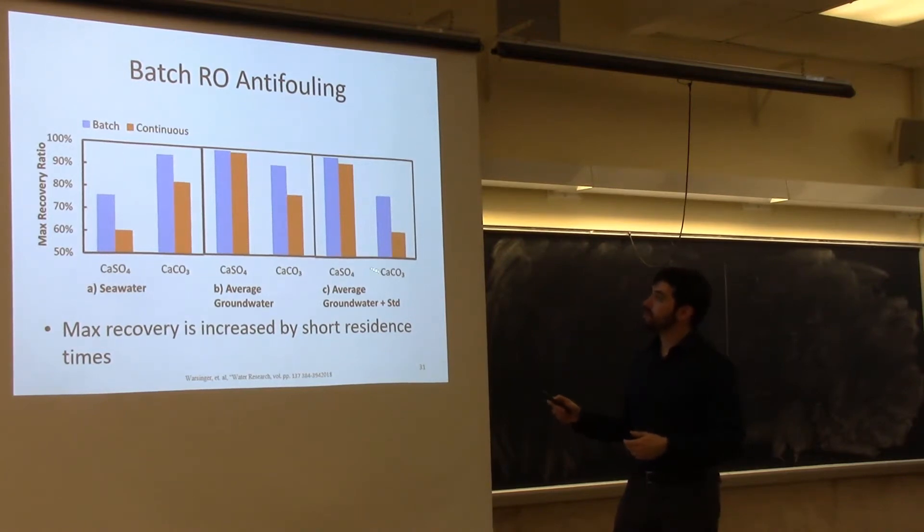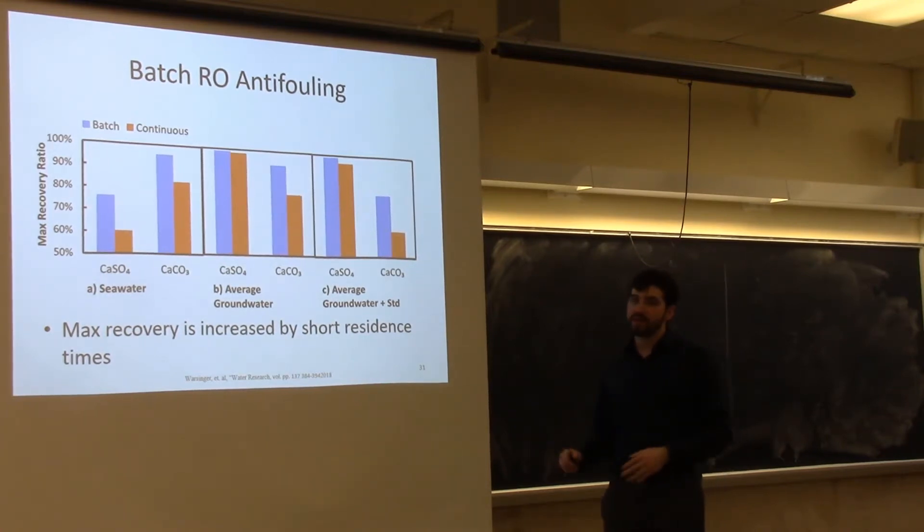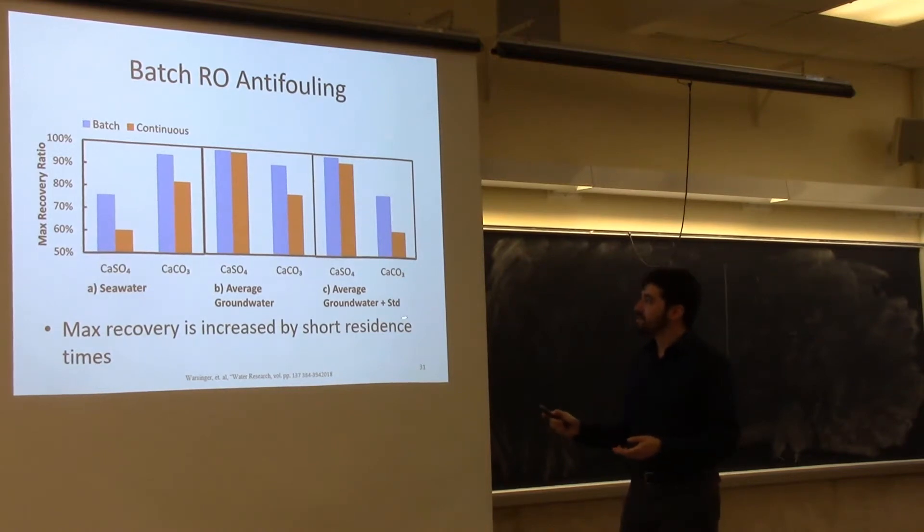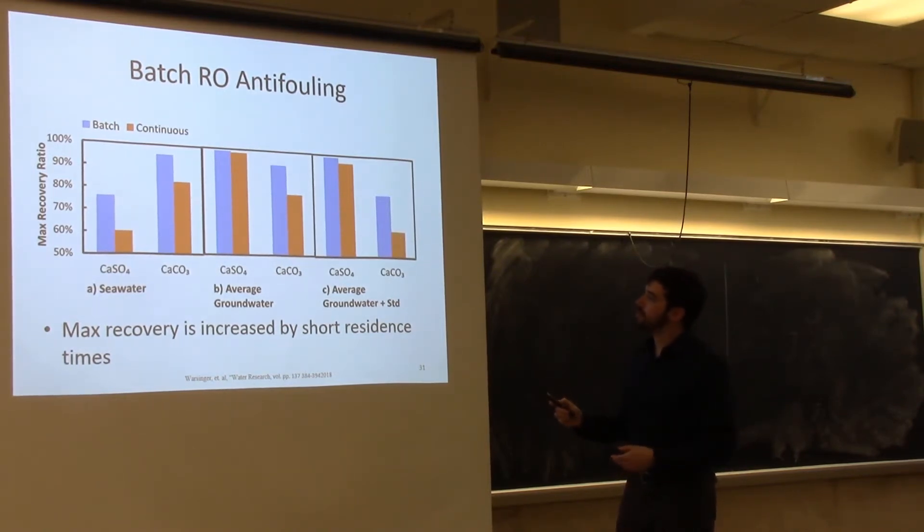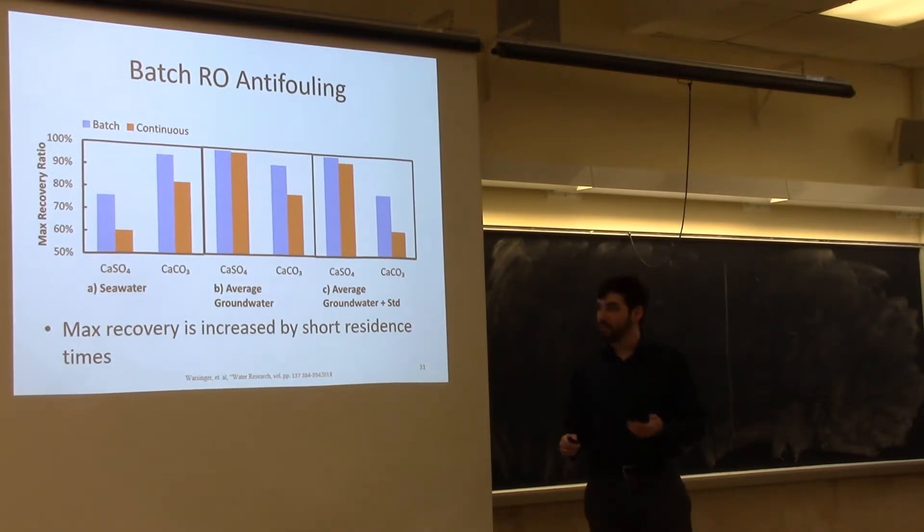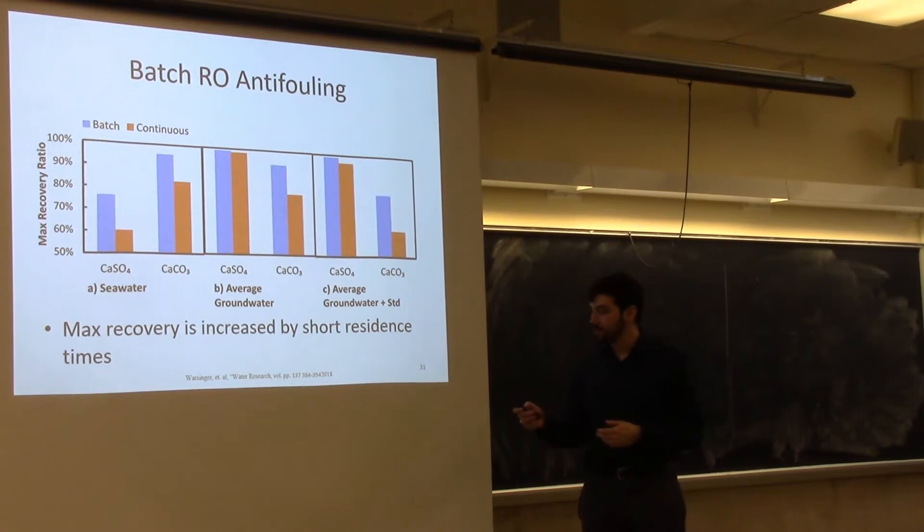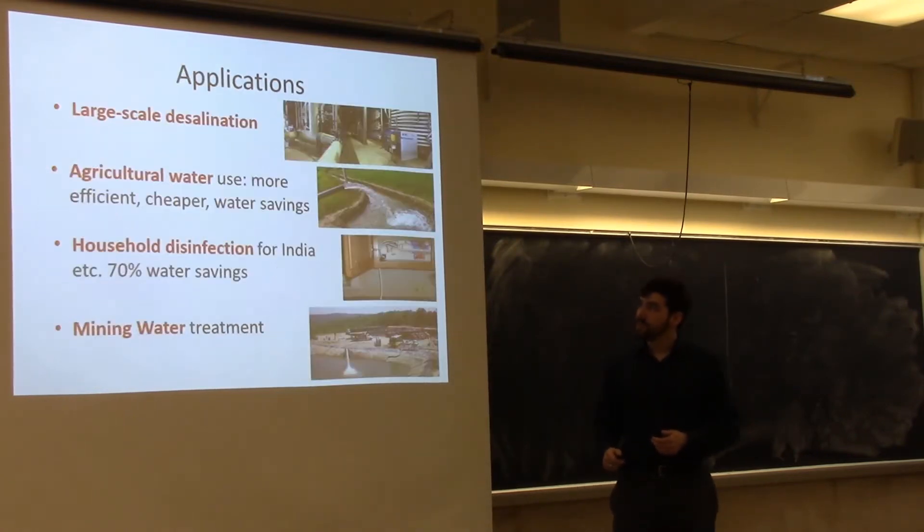We see for groundwater, the difference between batch versus continuous. For average groundwater, this is created from USGS database looking at all the aquifers in the U.S., versus groundwater that's worse by one standard deviation, we go from 80 up in the low 90s, or somewhere in the 60s to over 80% recovery ratio. The exact details and numbers are in my paper. We see really strong benefits.